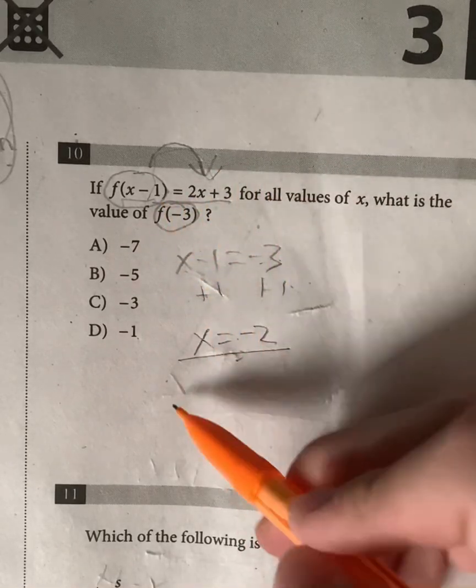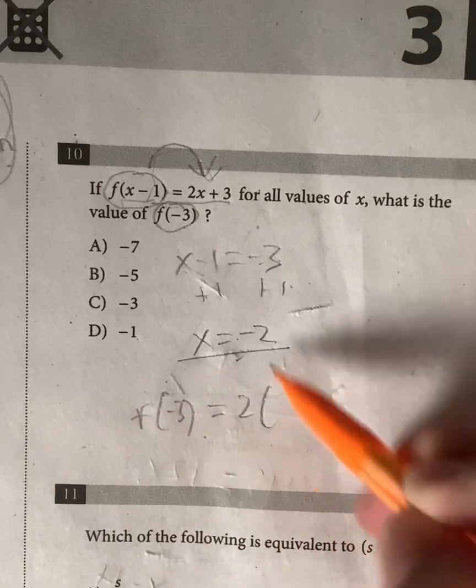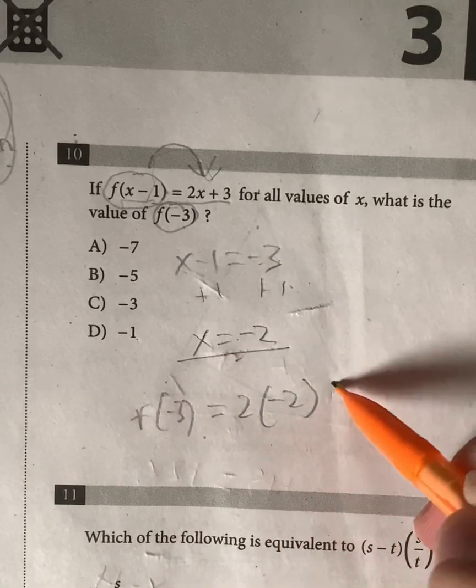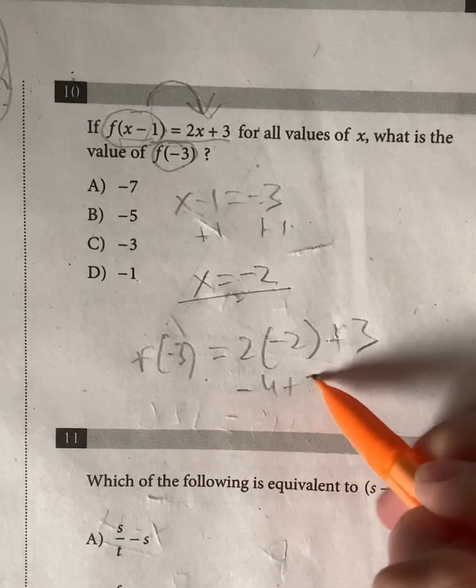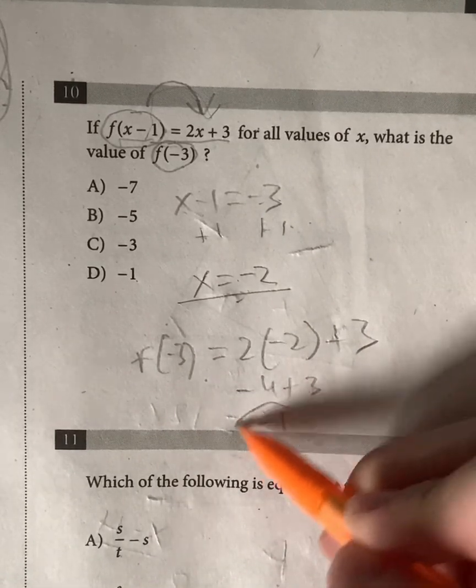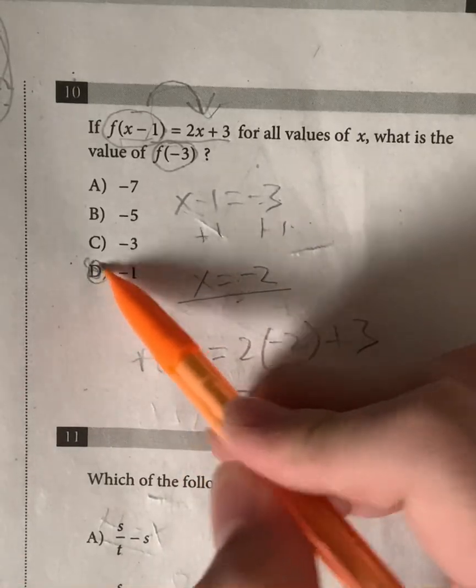So we plug negative 2 in, f of negative 3 is going to be equal to 2 times x, which is negative 2 plus 3. And now this will give us negative 4 plus 3, which is equal to negative 1. Meaning the real value of f of negative 3 has to be negative 1.